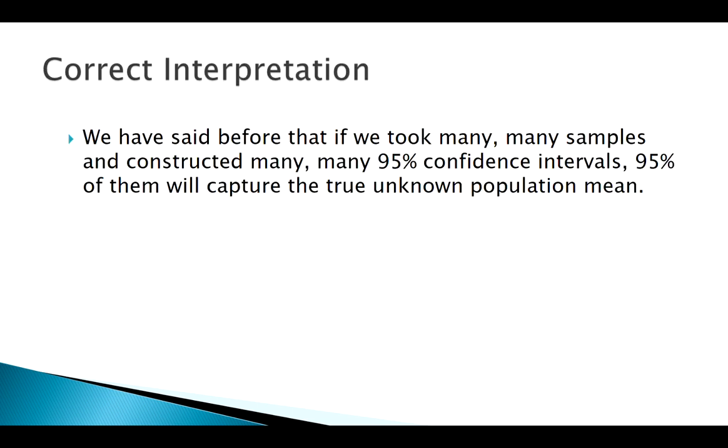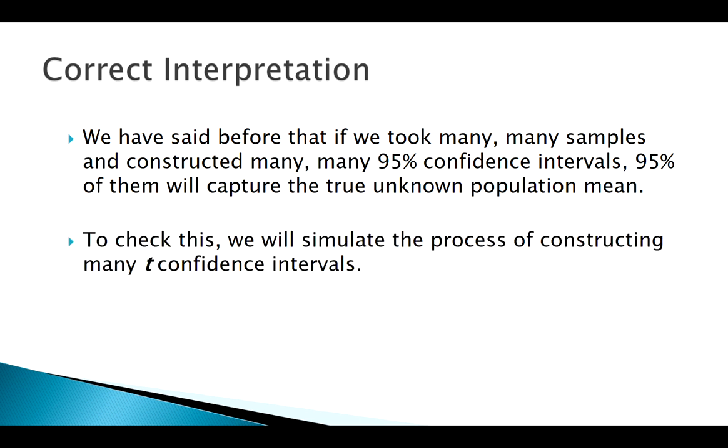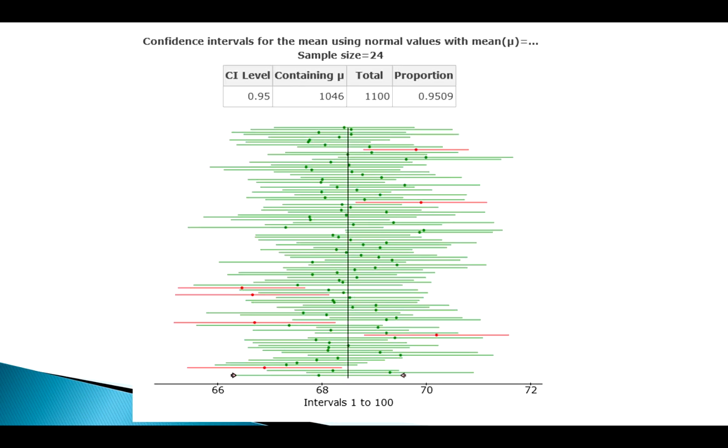Another interpretation we've looked at before with z intervals was if I created a whole bunch of intervals, we'd expect your confidence level percent of them to do their job correctly. Does this hold for the t distribution as well? I simulated this in a computer program. I did 1100 of them and found that 1046 captured mu. These were all 95% confidence levels with sample size 24. 95% of them do their job. The green ones captured the parameter, the red ones did not.